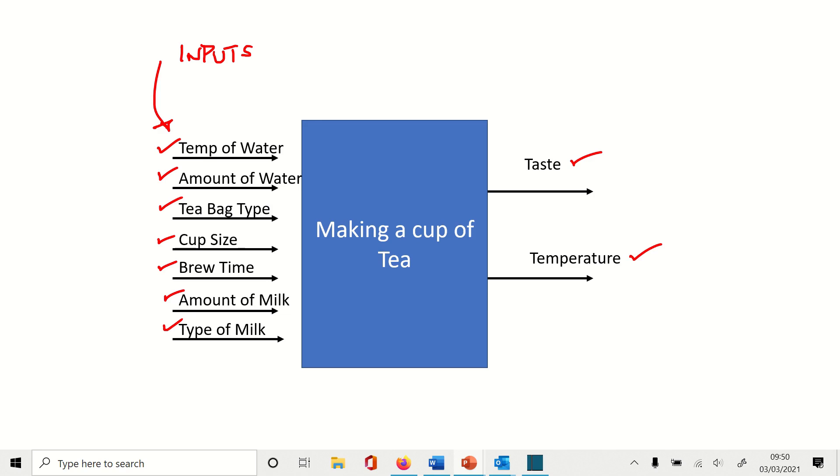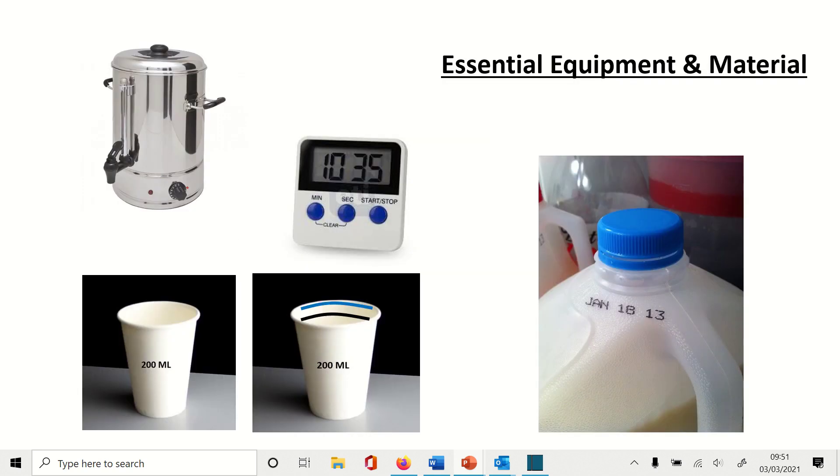So there are the variables, there are the inputs that are crucial to making a cup of tea so that we please the customer. Now the other thing I can do, because I've specified some things that are really important, suddenly I can now get some photos, I can get some pictures, I can buy some equipment that helps me to run the process much better. For instance, I've decided to buy a water boiler rather than use a kettle because with the water boilers I can control the temperature. We've got the cup size, which is 200 mil, so I've got that. I've got the timer so that we know how long it's brewing for.